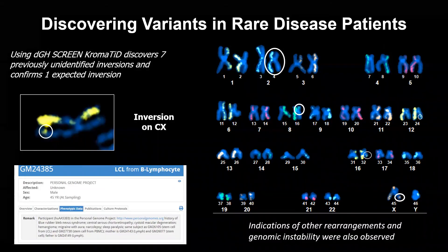For example, we are studying the GM24385 cell line from Coriell, which is the source of the Genome in a Bottle DNA that is so widely used for qualifying sequencing techniques. In this most sequenced genome in the world, we have discovered a number of previously unidentified rearrangements, as well as confirmed a known rearrangement.